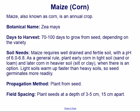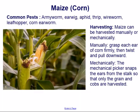Propagation method: plant from seed. Field spacing: plant seed at a depth of 3–5 cm, 15 cm apart.